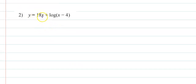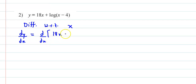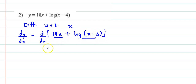A function y is equal to 18x plus log of (x minus 4). So again we differentiate with respect to x, and we have dy by dx is equal to derivative of 18x plus log of (x minus 4). اب دونوں terms کا ہم individual derivative لیں گے. 18 تو coefficient ہے, وہ as it is رہے گا, and derivative of x is 1, so this is 18 into 1. Now this is of the form log of f(x).